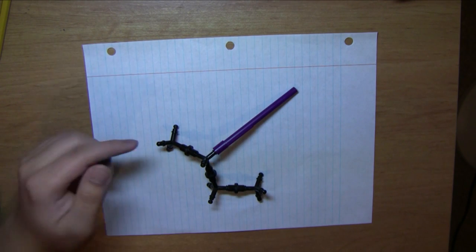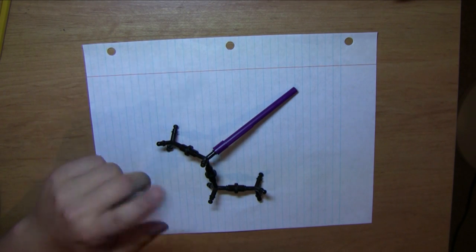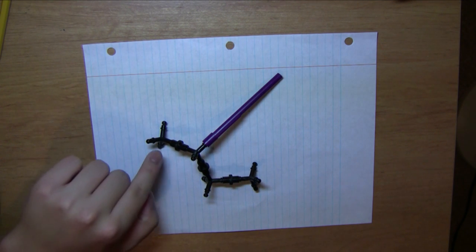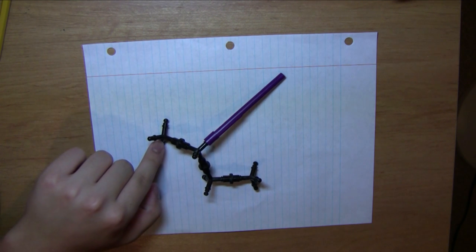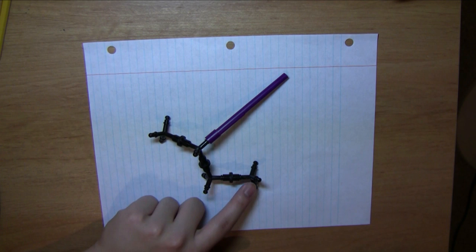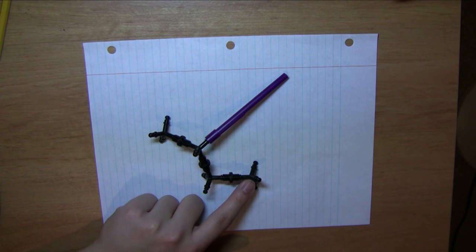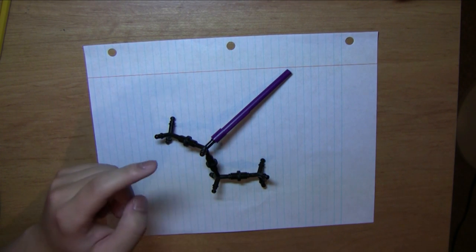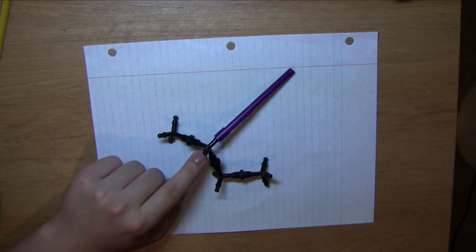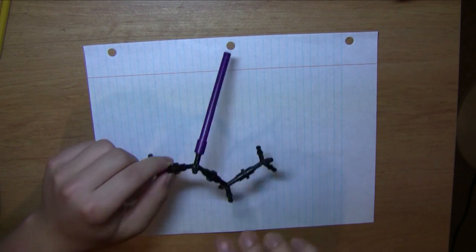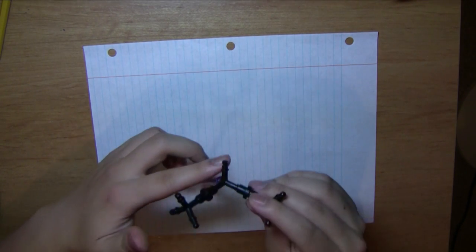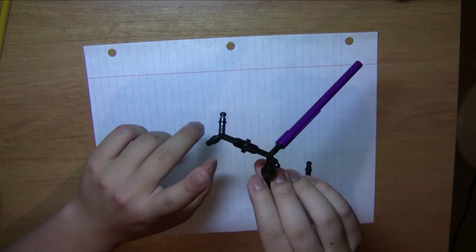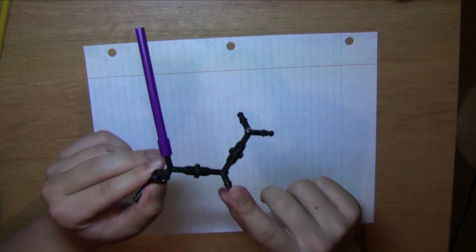Let's look for the stereogenic carbon in this molecule. We can't have this one because it has three hydrogens, and this one also has three hydrogens, and this one has two hydrogens. So it can only be this carbon here — the second one — because it has one hydrogen, a bromo group, a methyl group, and an ethyl group.